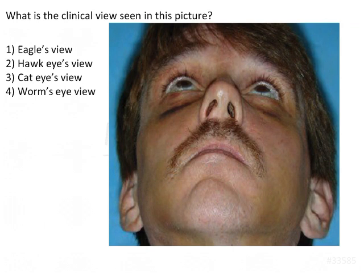Worm's eye view is the view seen from below. A worm crawls on the ground, so when it looks up it sees everything from below towards the sky — that is why it is called Worm's eye view. In contrast, Eagle's view sees everything from top to bottom, requiring placement at a higher level, whereas Worm's eye view requires placement at a lower level.